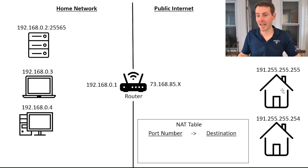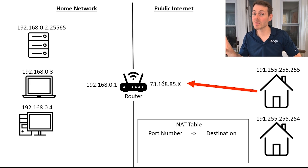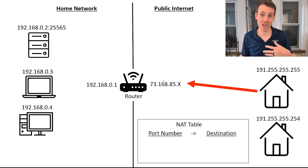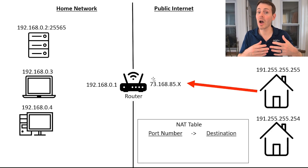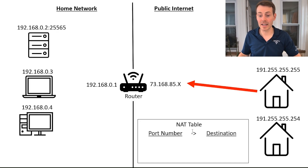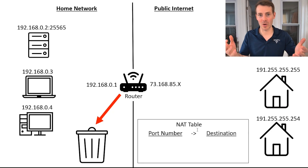Let's say we don't have port forwarding enabled and our friend tries to access our Minecraft game server. What happens is they send a request to the public IP address of our router. Public IP addresses can only communicate with public IP addresses, and private IP addresses can only communicate with private IP addresses as a result of NAT. So this request comes into our router saying 'I want to access the Minecraft server on your home network,' but because we don't have any port forwarding rules in our NAT table, the router doesn't know what to do with this traffic. So what does it do? It throws it in the trash.